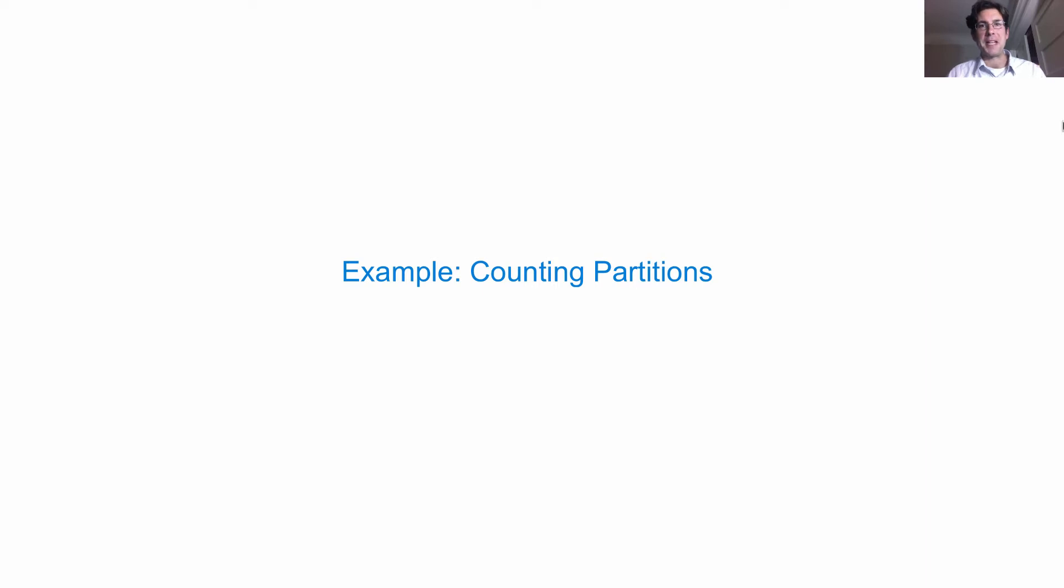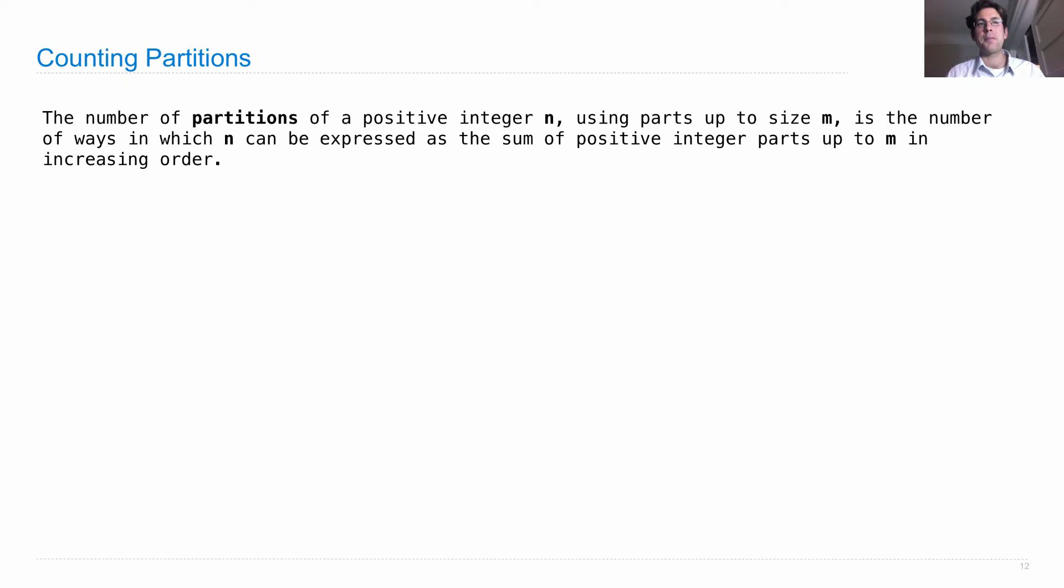Now we're going to look at a more substantial example. Here's the problem. We want to count partitions, where the number of partitions of a positive integer using parts up to size m is the number of ways in which n can be expressed as the sum of parts up to m in increasing order.